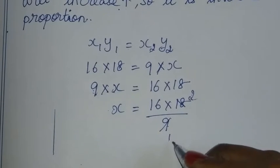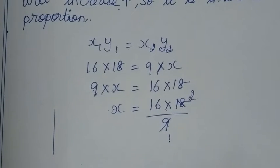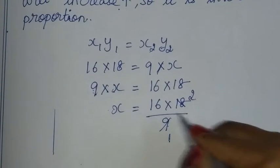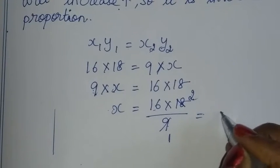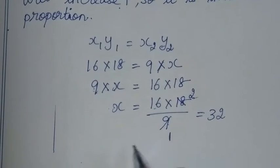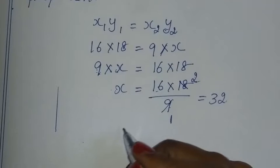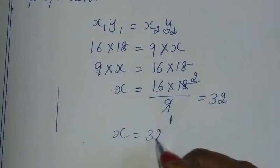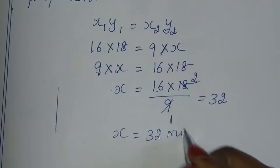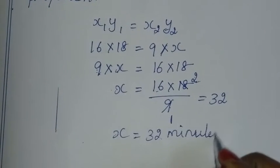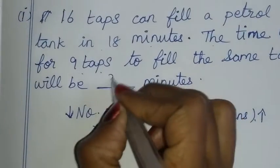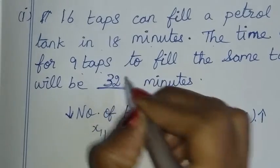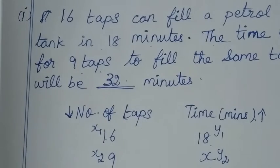So this is equal to 16 into 2 is 32. So x is equal to 32 minutes. The answer here is 32.